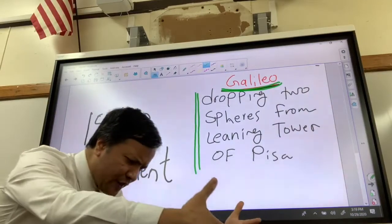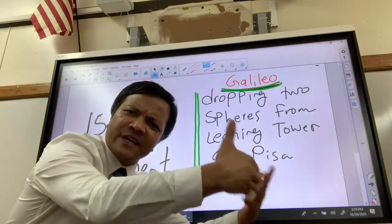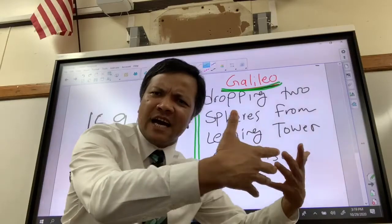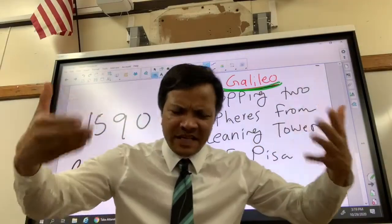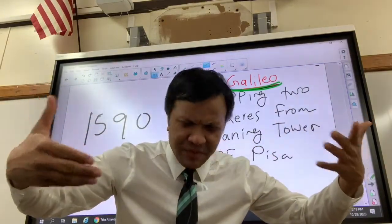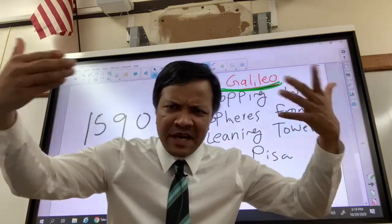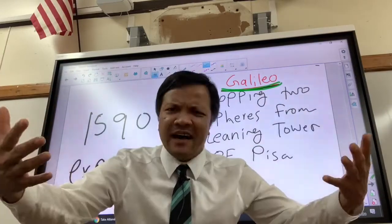Galileo was born in 1564 in Italy. In 1589, at 25 years old, he became the professor of mathematics at the University of Pisa.